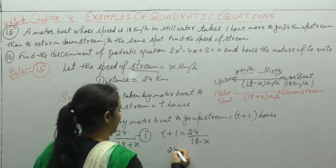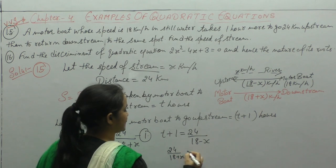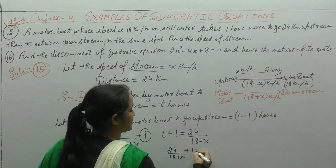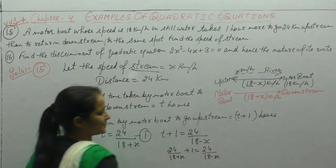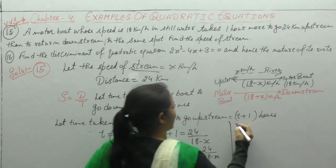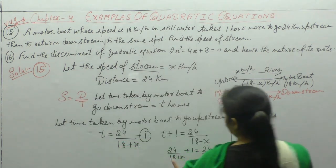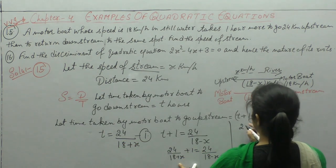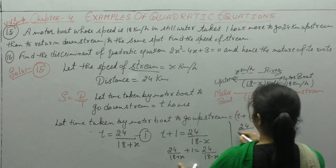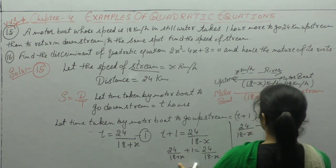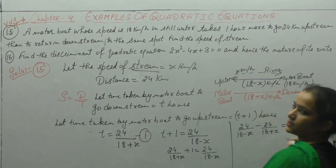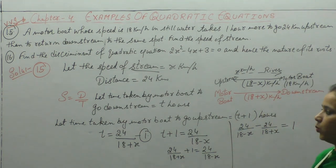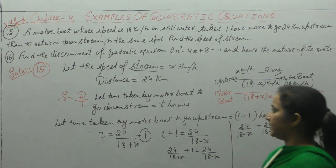T equals 24 upon (18 plus x). And T plus 1 equals 24 upon (18 minus x). Substituting T, we get: 24 upon (18 minus x) minus 24 upon (18 plus x) equals 1.